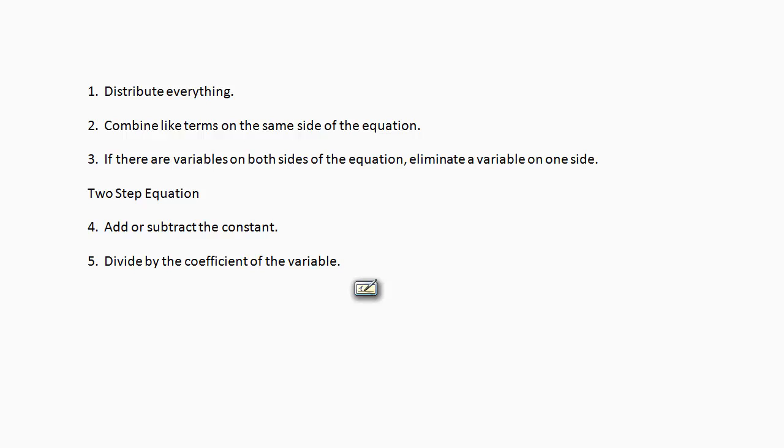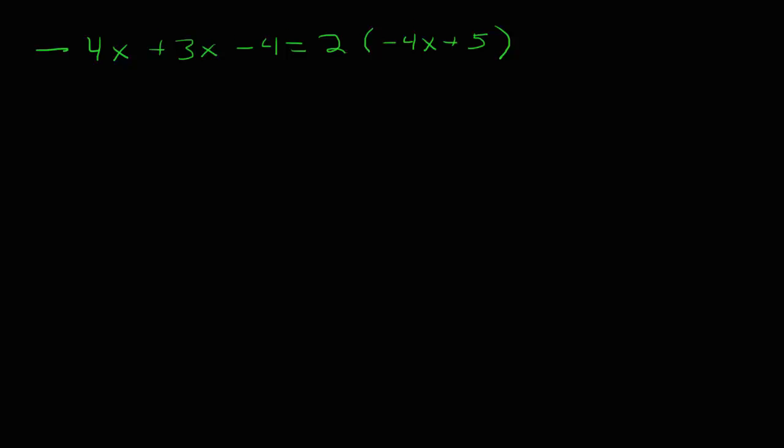Let's take a look at exactly what that means relative to our steps. Suppose we have this equation here, negative 4x plus 3x minus 4 equals 2 times negative 4x plus 5.